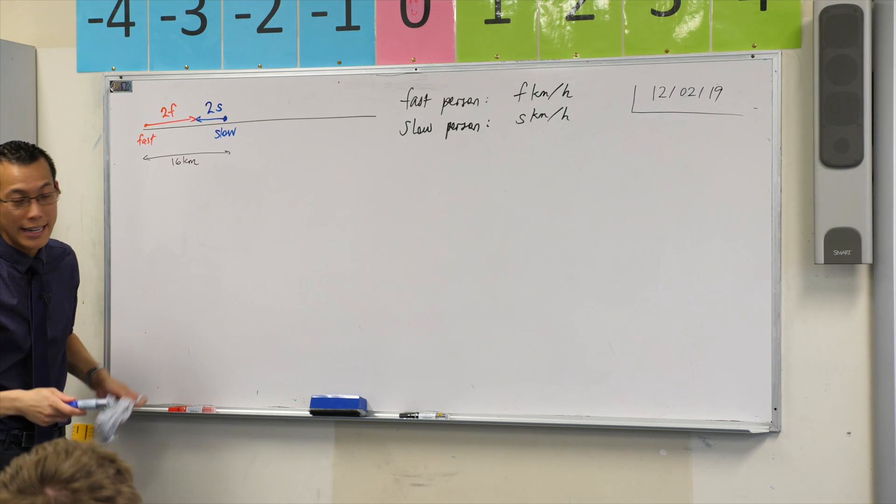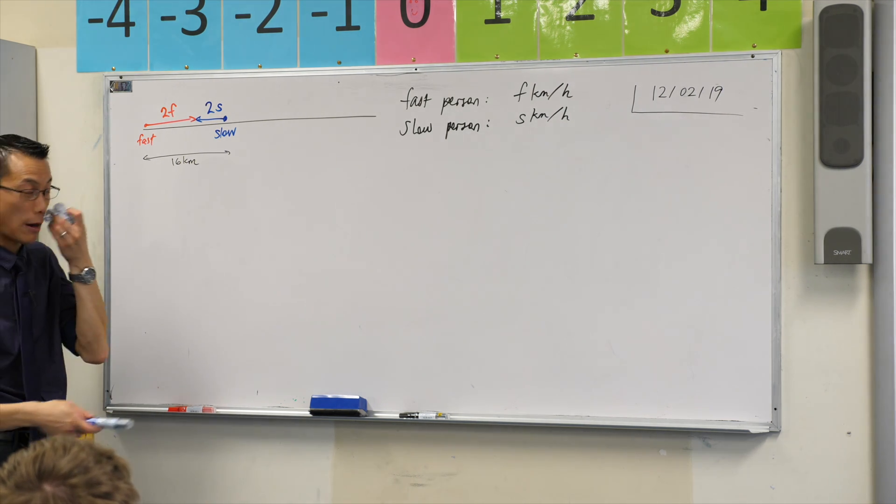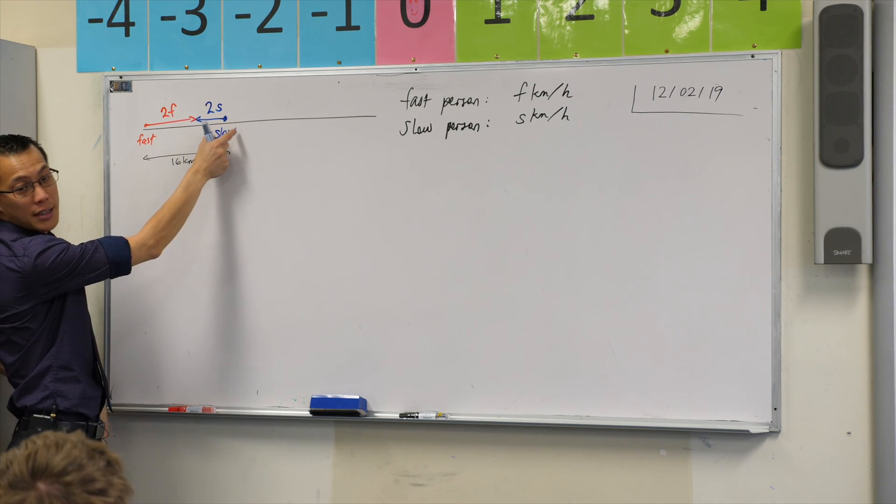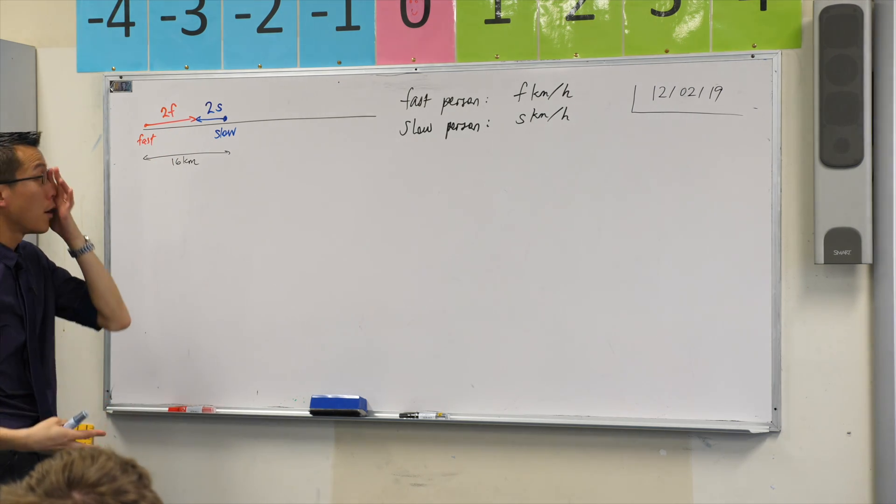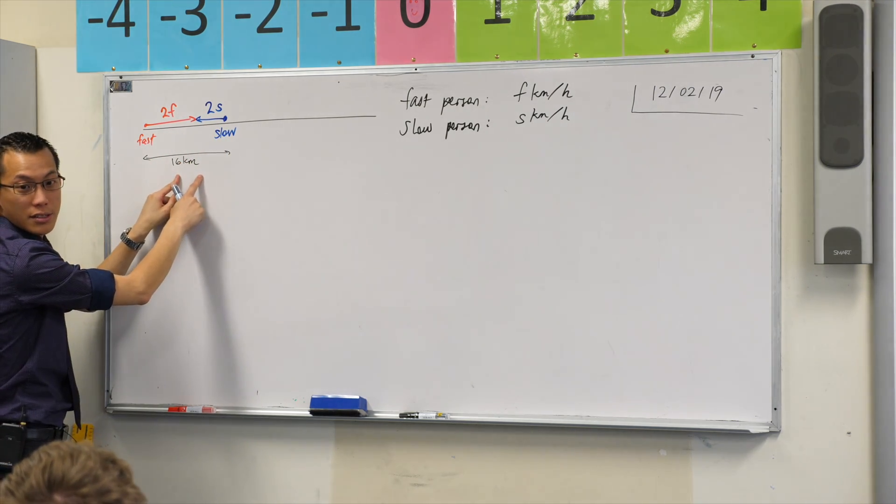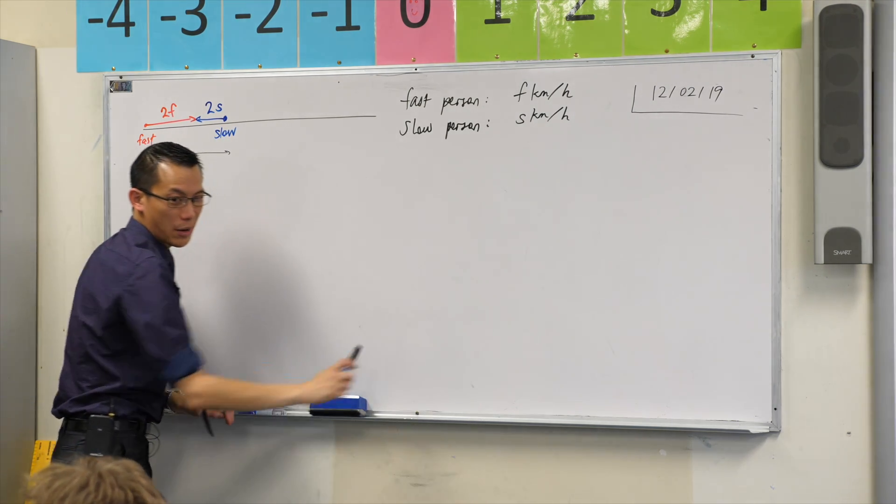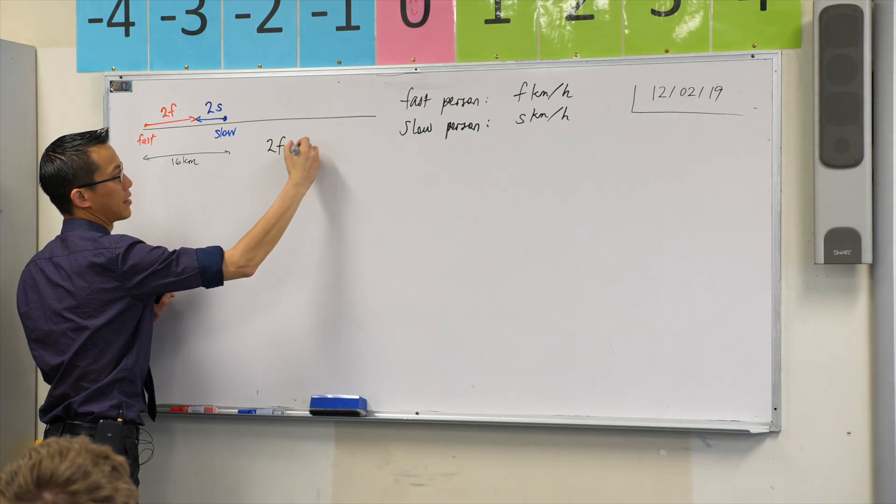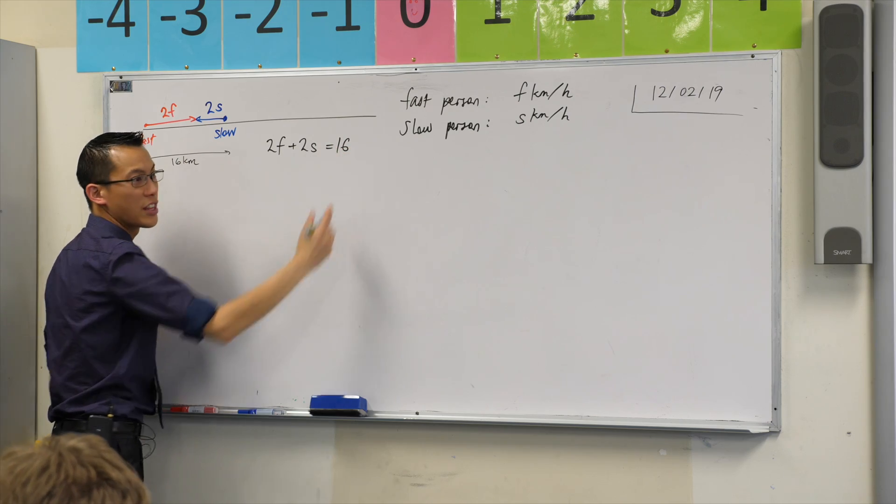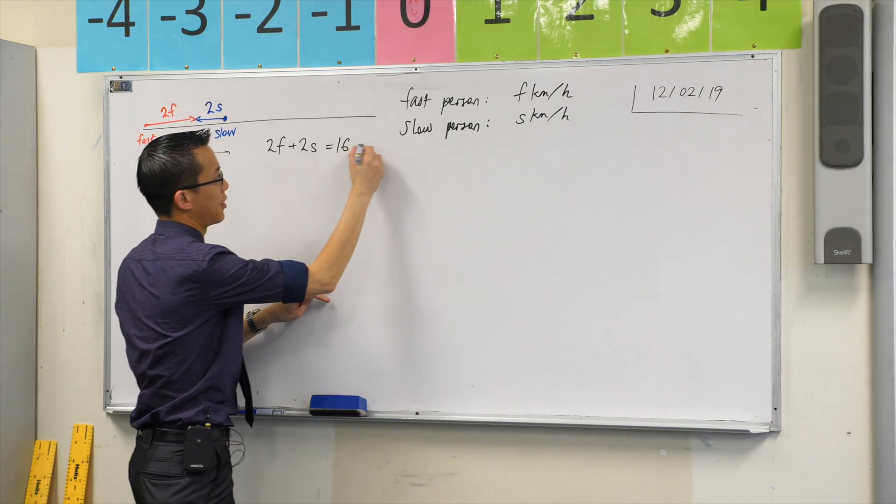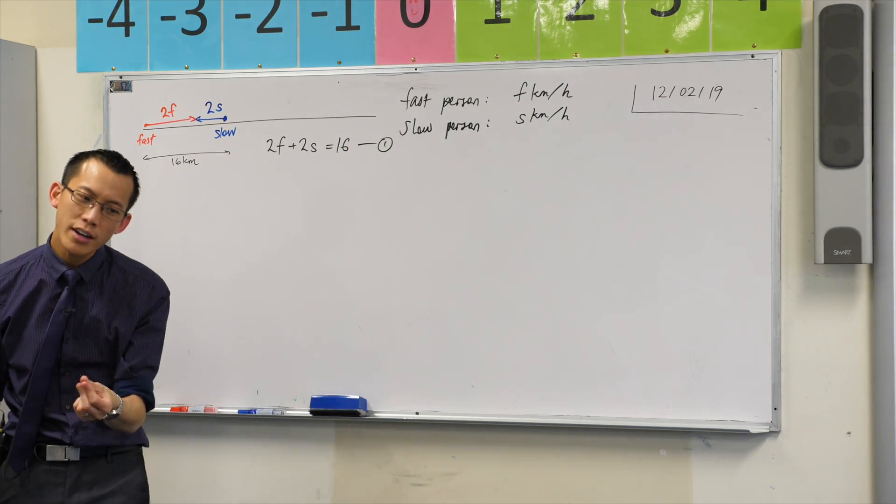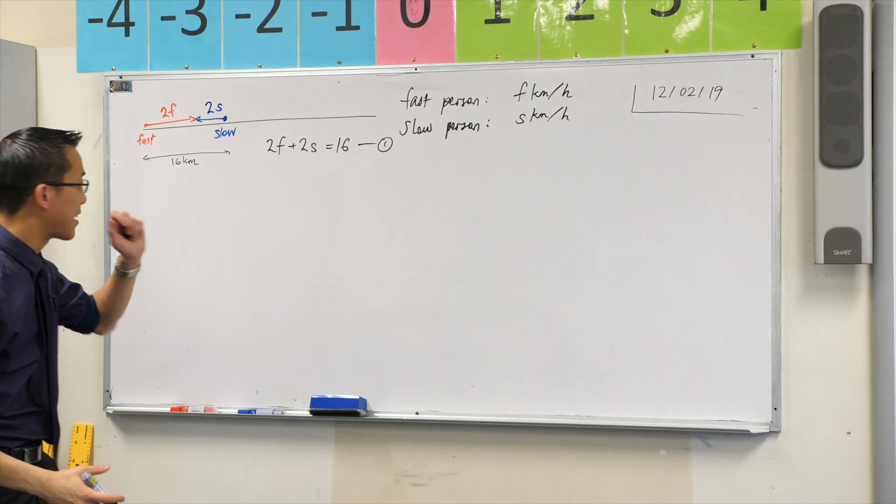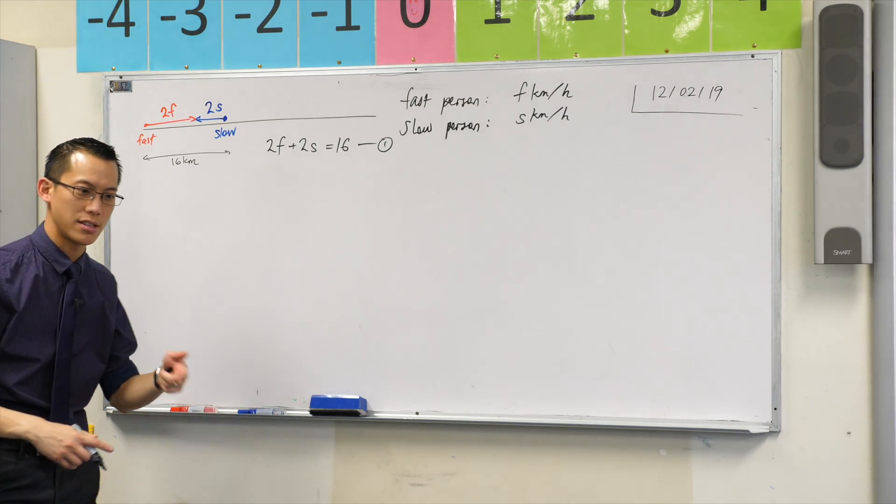Now from this, I could already write down one of my equations. If this length here is 2s, this one's 2f, they add together to cover the total distance. So what equation can we write from this? 2f + 2s = 16. So there's our first equation. It's not enough information on its own, and that's why they give us this other piece of information.